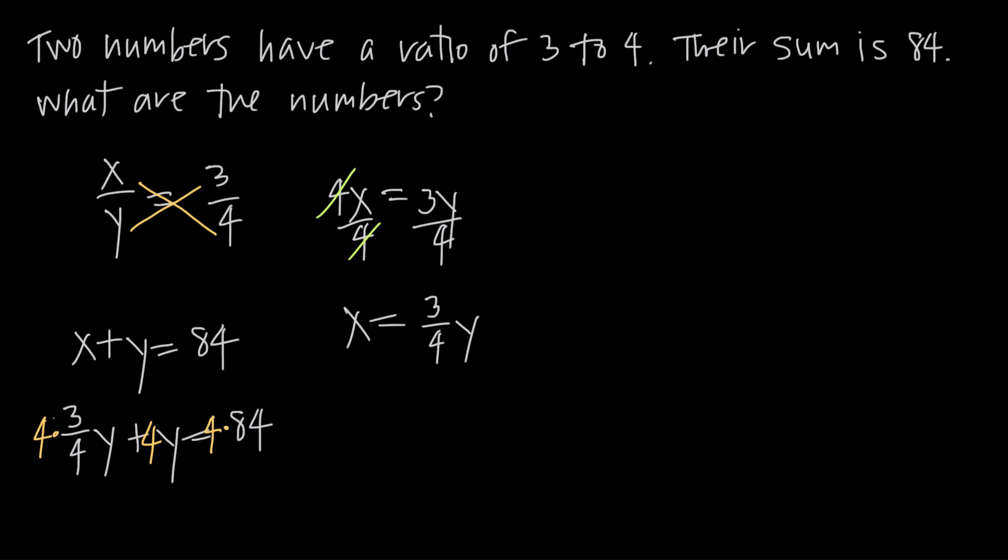So 4 times 3 over 4, I'm going to get my fours to cancel, and I'll just be left with 3y. So I'll get 3y plus 4y equals 4 times 84, which will be 336.